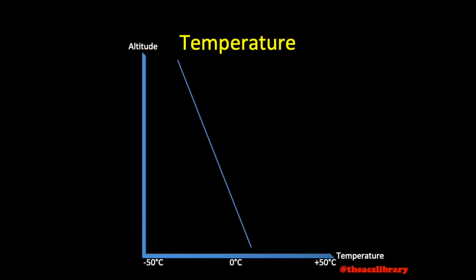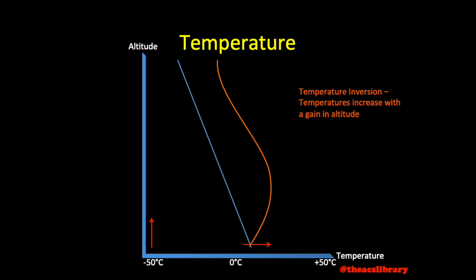In our perfect world, the temperature decreases as altitude increases. The world may be so imperfect, however, that temperatures actually increase momentarily rather than decrease as we climb. This is known as a temperature inversion.